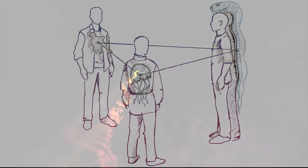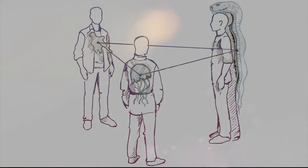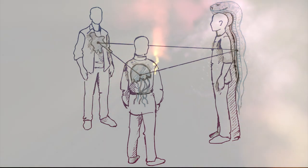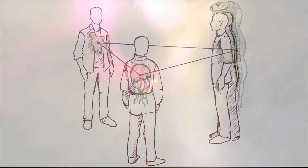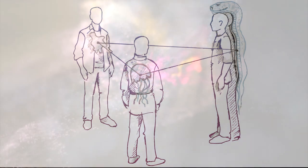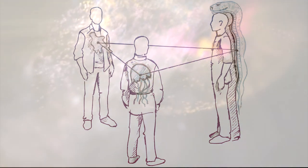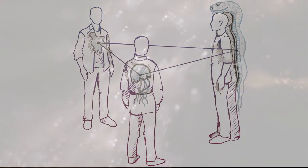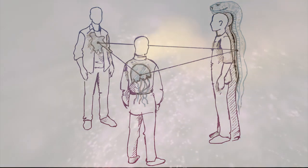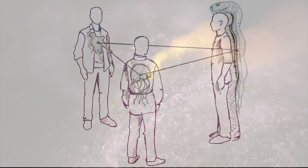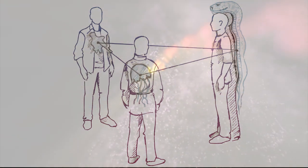For such a larva, which in fact sits in the gap between our world and the astral world, it is easy to open the patient's blocked energy channels. This is perceived by people as the healing abilities of the gifted. At the same time, the larva puts a part of itself into the cured — a small larva — connecting itself to another power source.